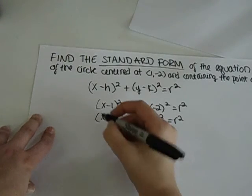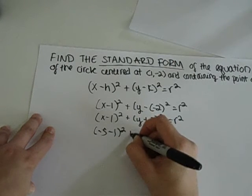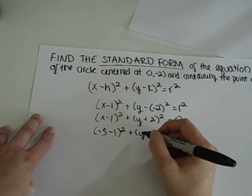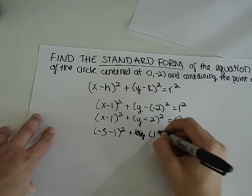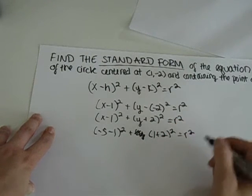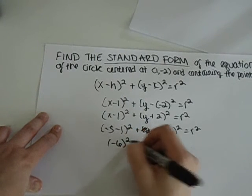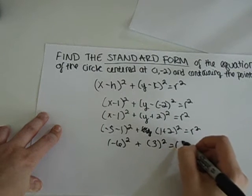So take -5 minus 1 squared plus y. Oh, yeah. So that would be 1. Sorry. 1 plus 2 squared equals r squared. And if you simplify that, -5 minus 1 is -6 squared plus 3 squared equals r squared.